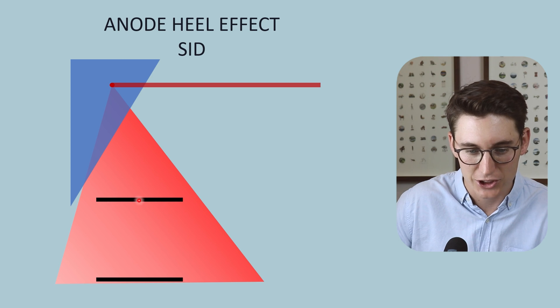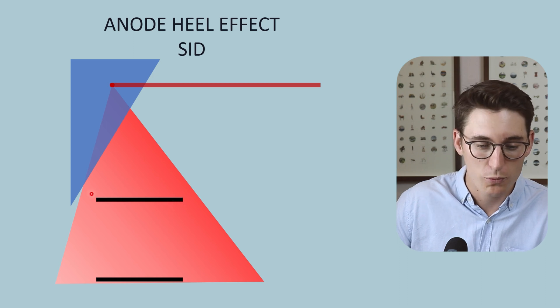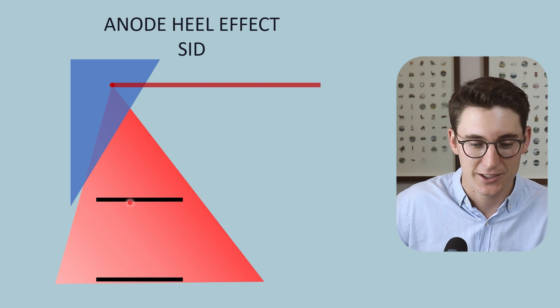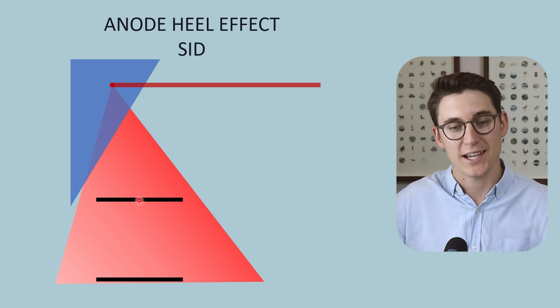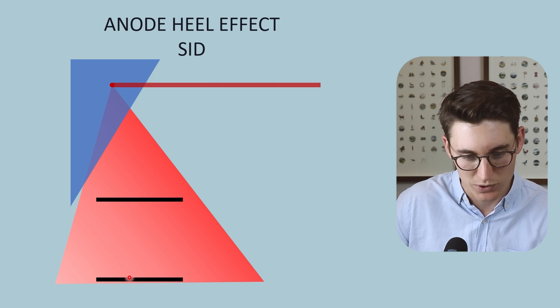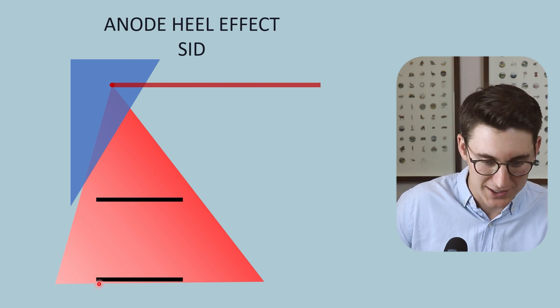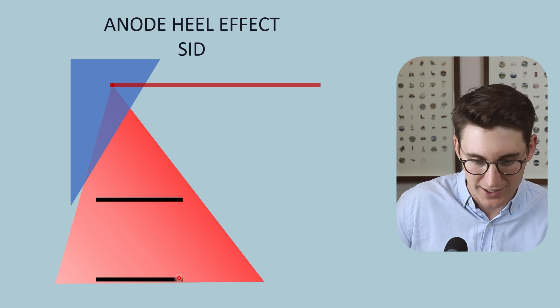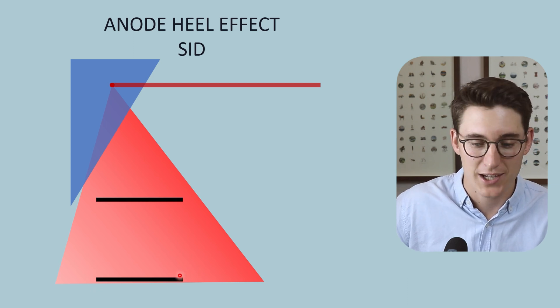If you look at the variation here between the start of our detector and the end of our detector, we are almost getting the full spectrum of varied intensities here. If we move that detector away, we increase our source to image distance as we move it away.